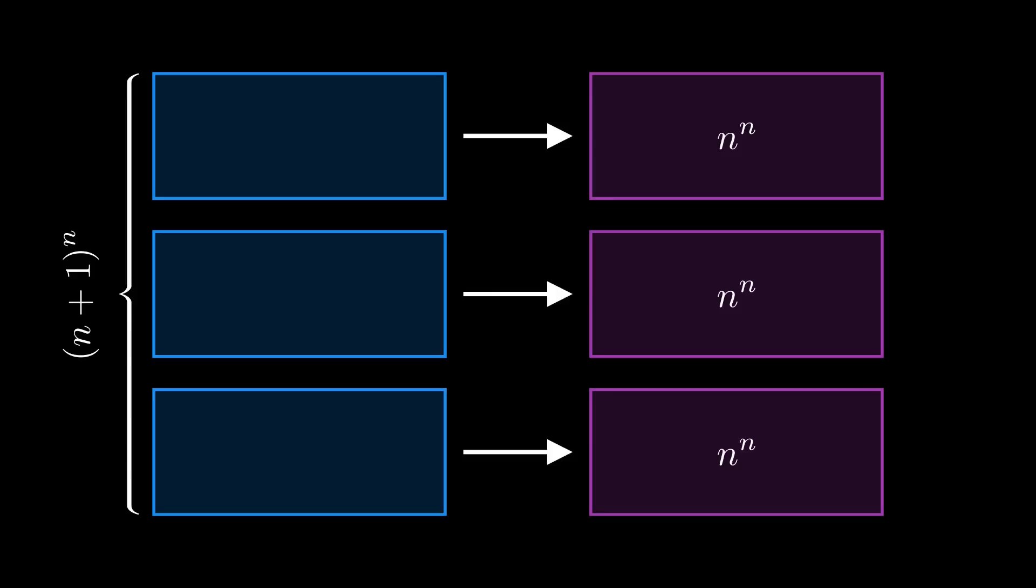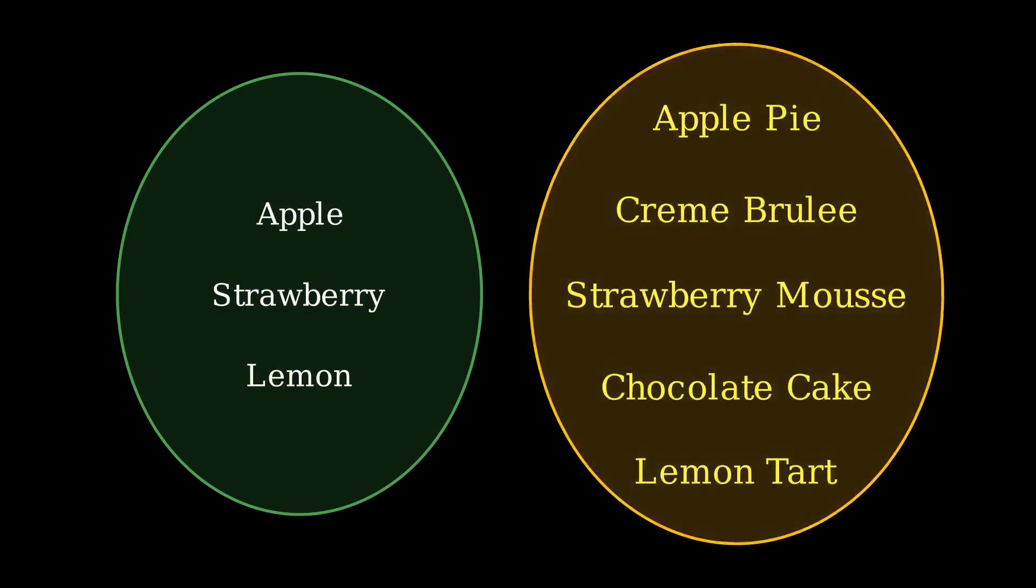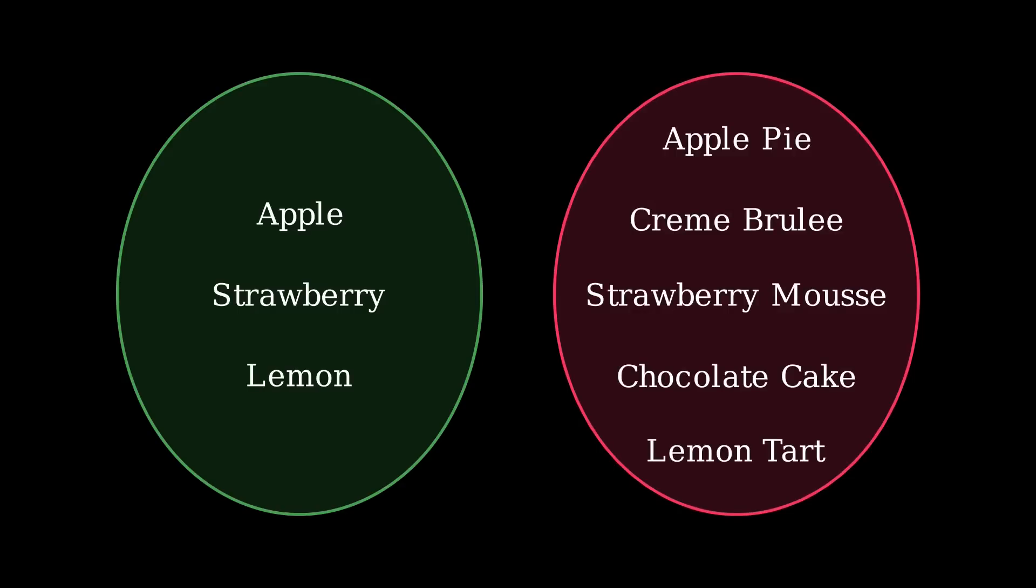Let's take a moment to look at how we can compare set sizes. For example, to show that the set of fruit on the left is no bigger than the set of desserts on the right, we can create a mapping from fruits to desserts while making sure that each element remains distinct after the mapping. This is called an injection.